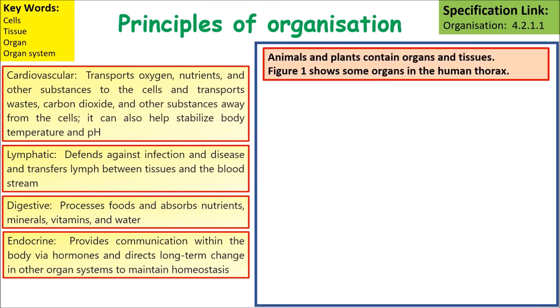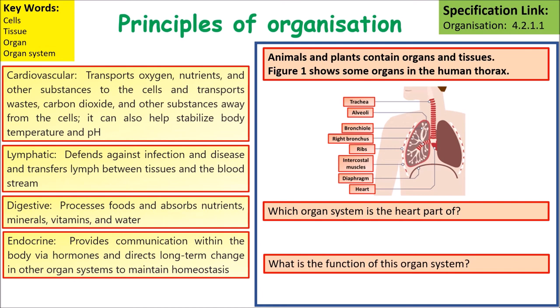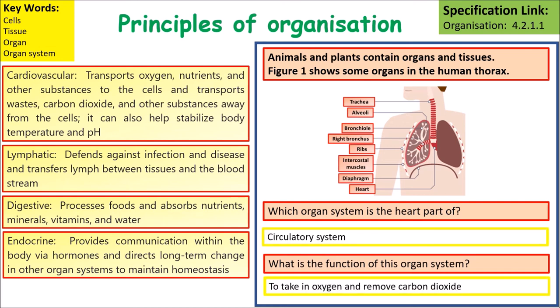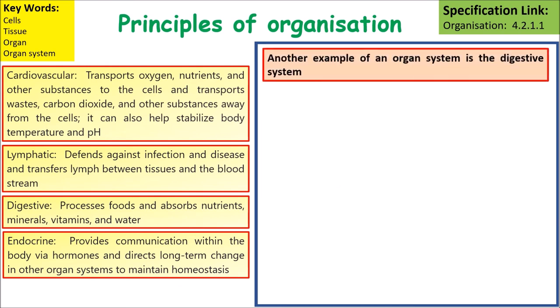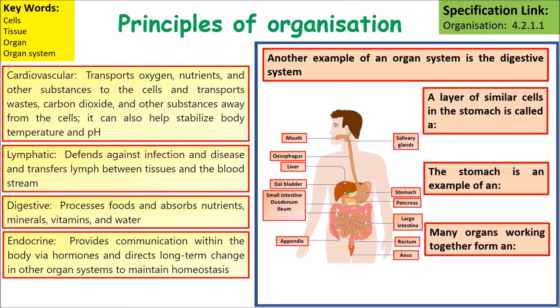Animals and plants both contain organs and tissues. Looking at a diagram of the human thorax: the heart is part of the circulatory system, and the organ system shown functions to take in oxygen from the air and remove carbon dioxide from the body. In the digestive system, a layer of similar cells in the stomach is called a tissue, the stomach itself is an organ, and many organs working together form an organ system.